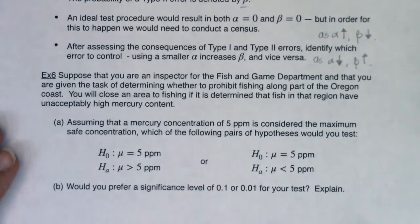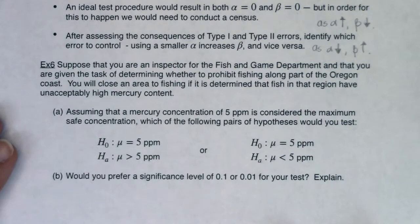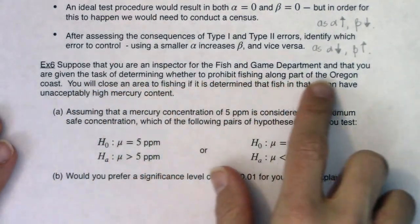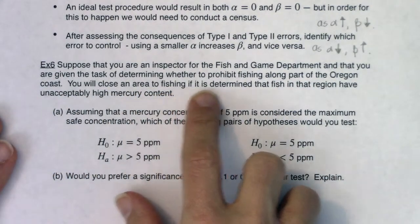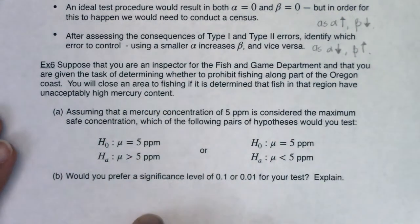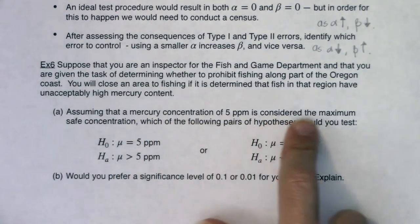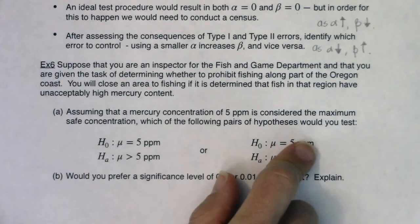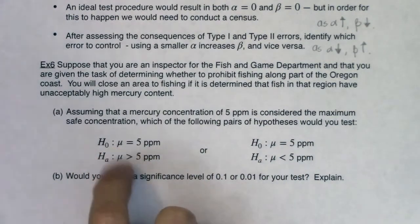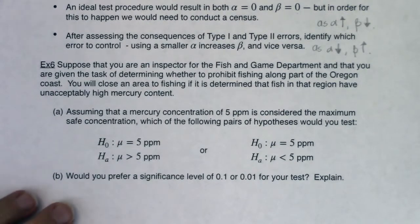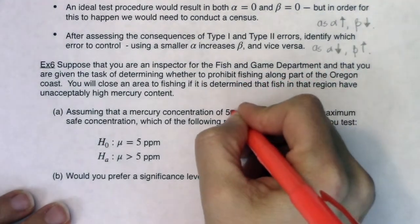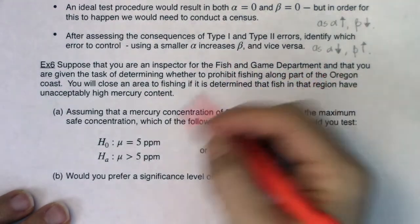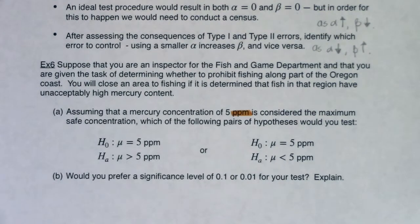Suppose you are an inspector for the fish and game department and you are given the task of determining whether to prohibit fishing along part of the Oregon coast. You will close an area to fishing if it is determined that fish in that region have unacceptably high mercury content. Assuming a mercury concentration of 5 parts per million is considered the maximum safe concentration, which of the following hypotheses would you test? I notice we've got mu's and units of parts per million, so we're in mu-land — we have numerical data.